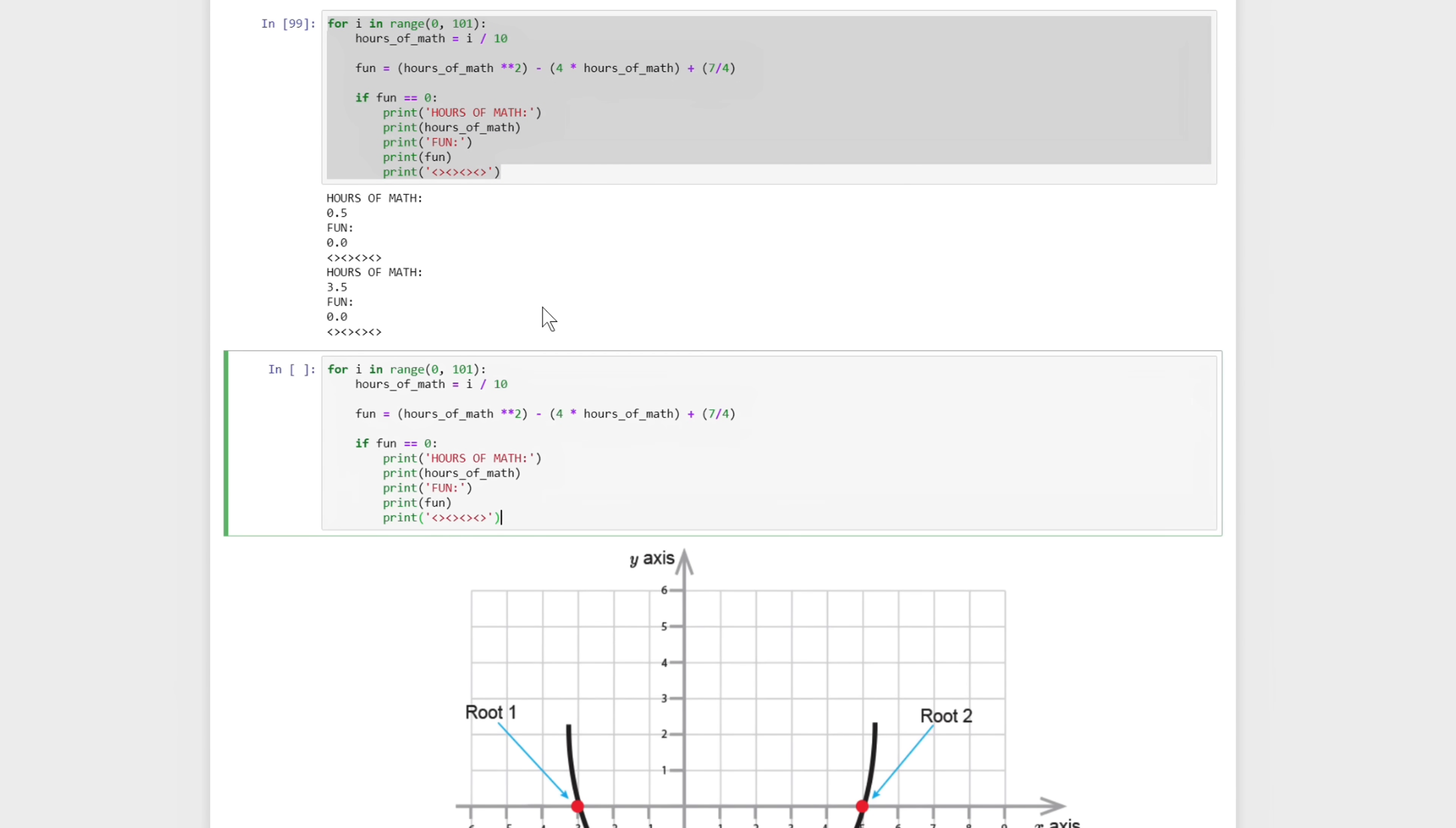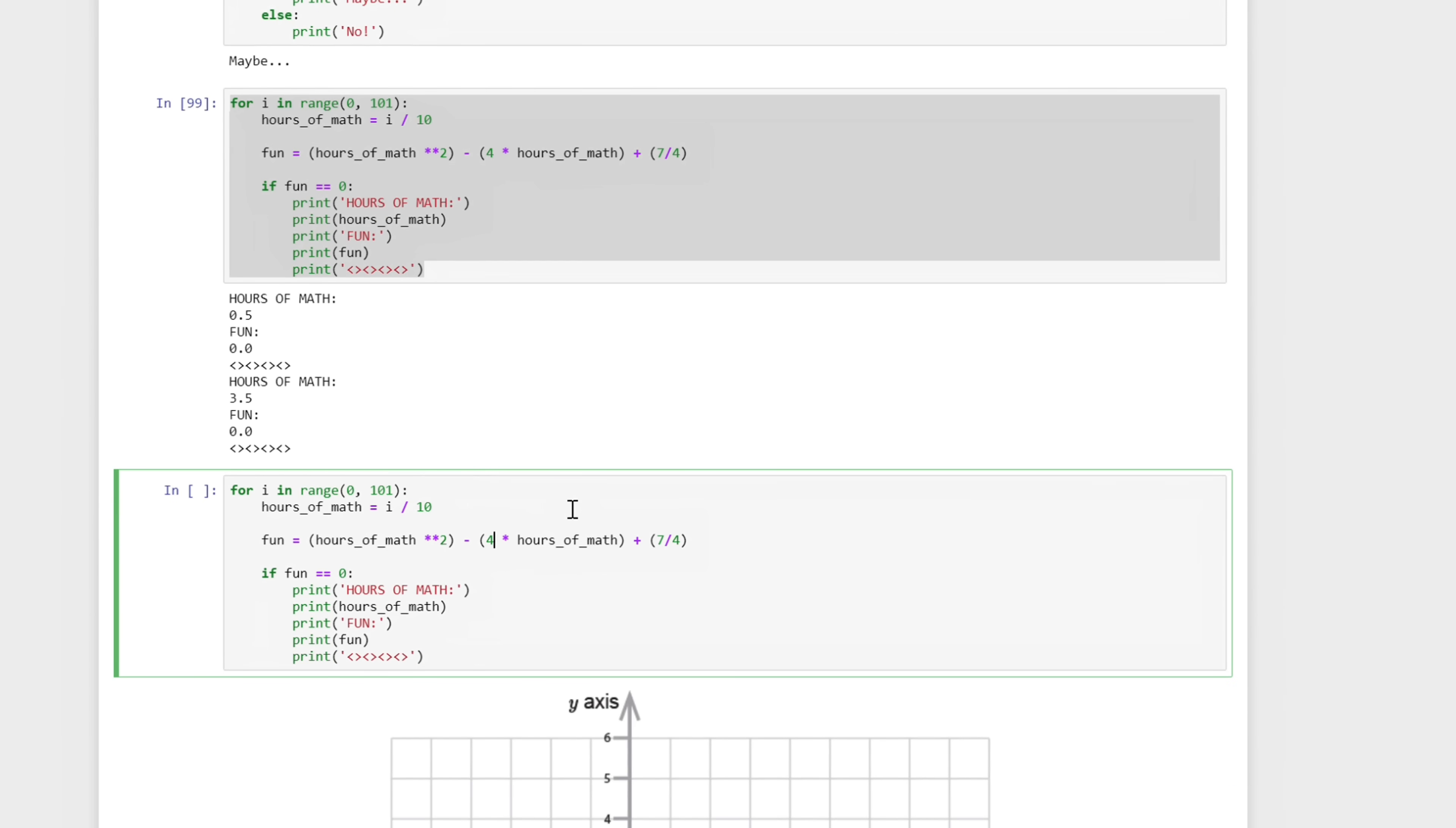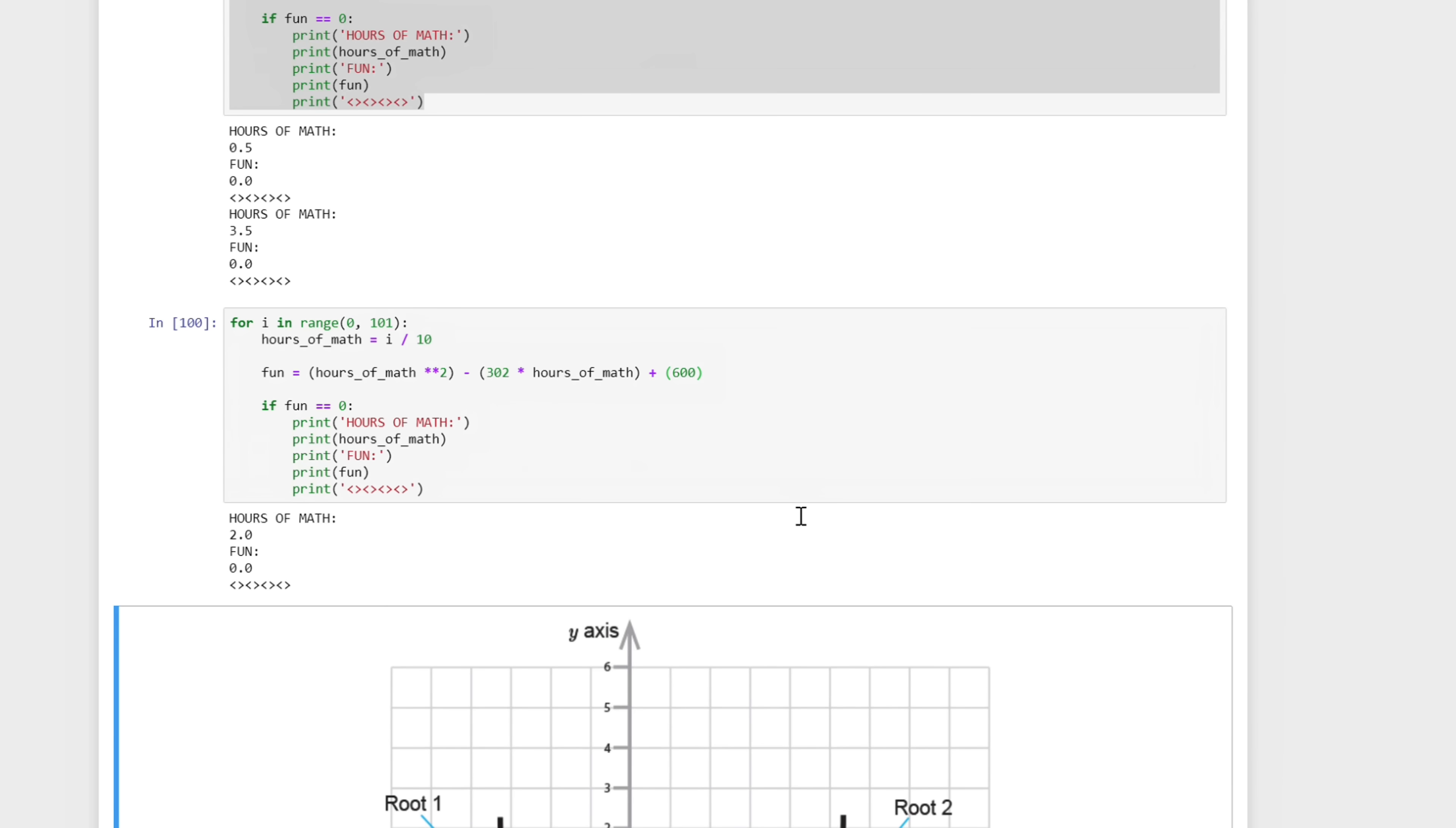So 0 and 10 in intervals of 0.1. And I was able to find both of the roots here. But you can imagine that if I was instead looking at a different equation, something like 302 times x squared plus 600, I find one root.